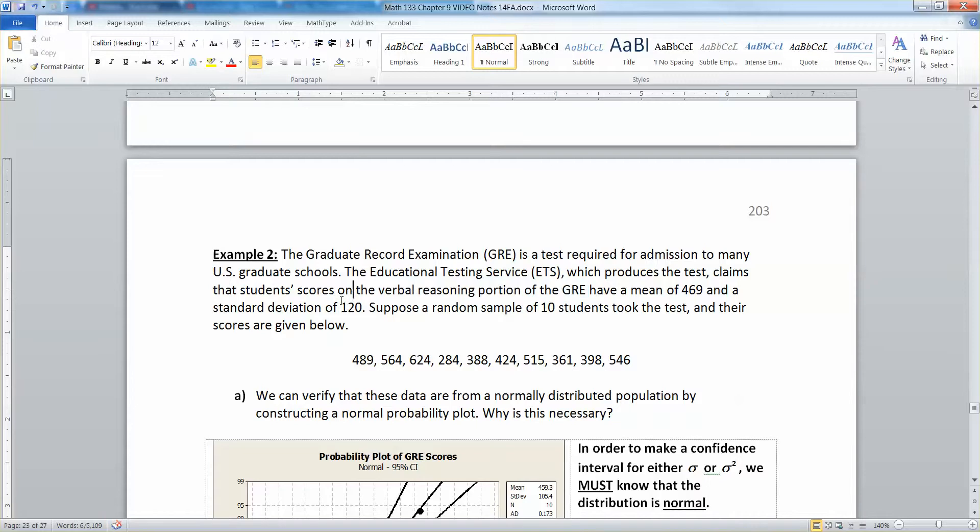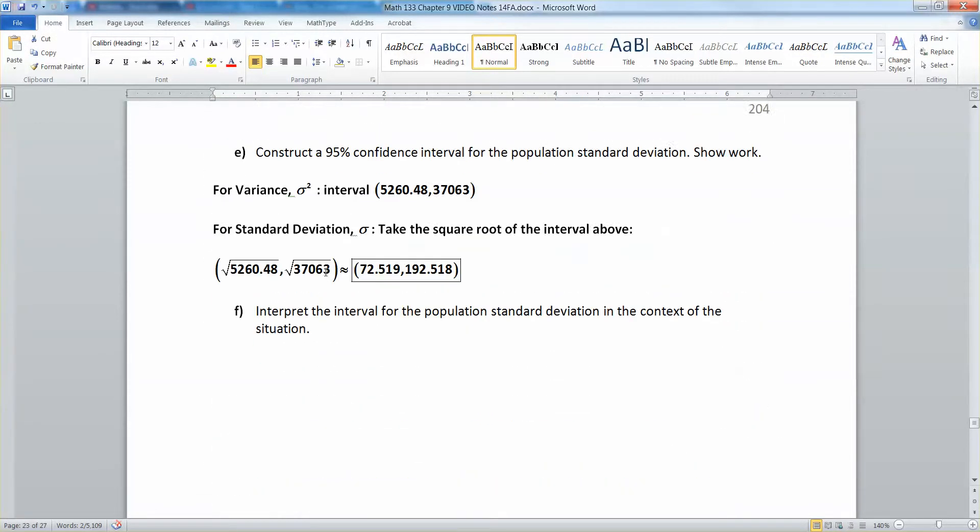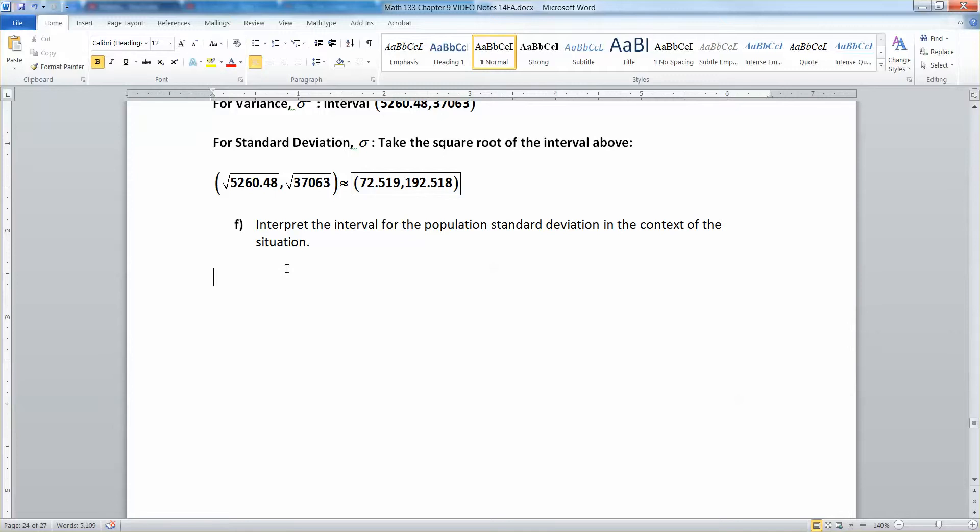See that? And what the standard deviation is. So we think that the population standard deviation of GRE verbal scores is somewhere between 72.519 and 192.518. So that's what we'll say.